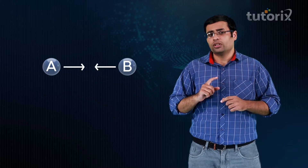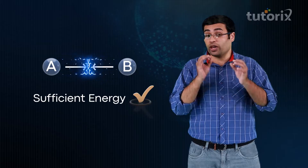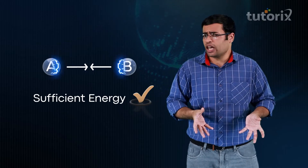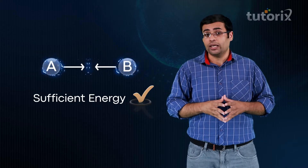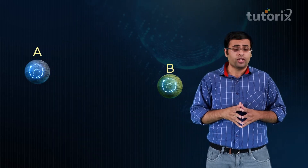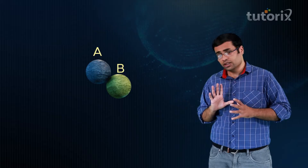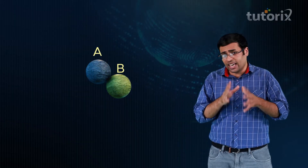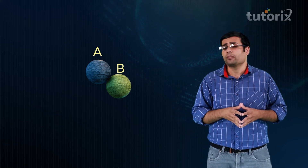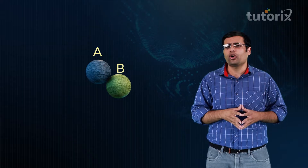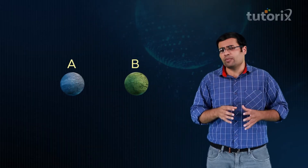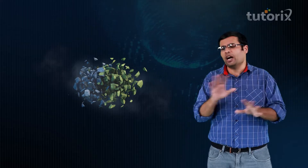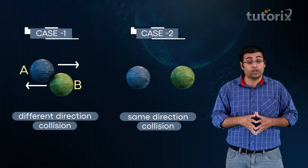Both reactants A and B now have sufficient energy for a collision to occur. But is this condition also enough? To understand the final condition, consider two rocks A and B moving towards each other with very high energy. After these two rocks touch each other, we are again left with A and B and no product P. So, for product P to form, both rocks A and B have to collide head-on in the same direction and be broken into multiple pieces.